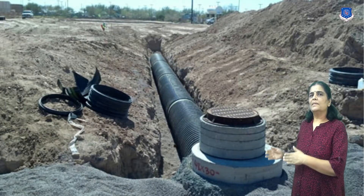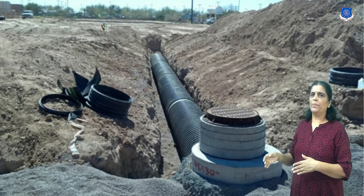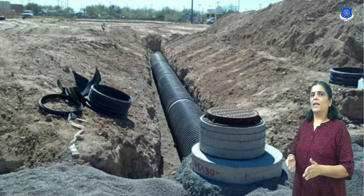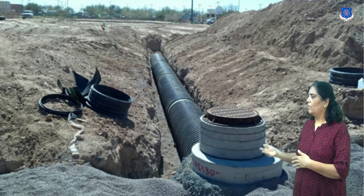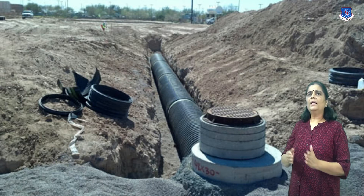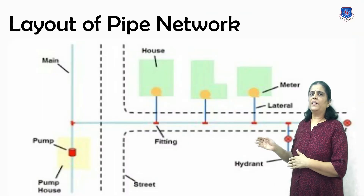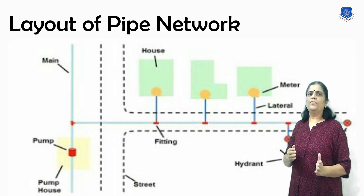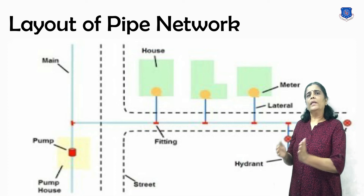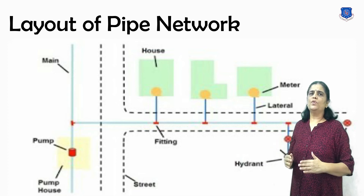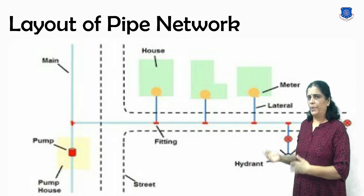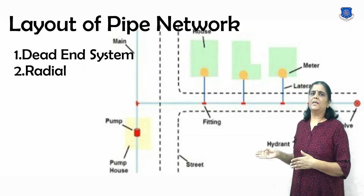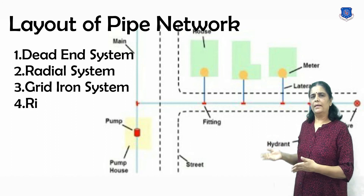Distribution pipes are generally laid below the road pavement and their layout generally follows the layout of the road. There are in general four different types of pipe layouts; any one of these, either singly or in combination, can be used for a particular area: grid system, radial system, ring-main system, and dead-end system.